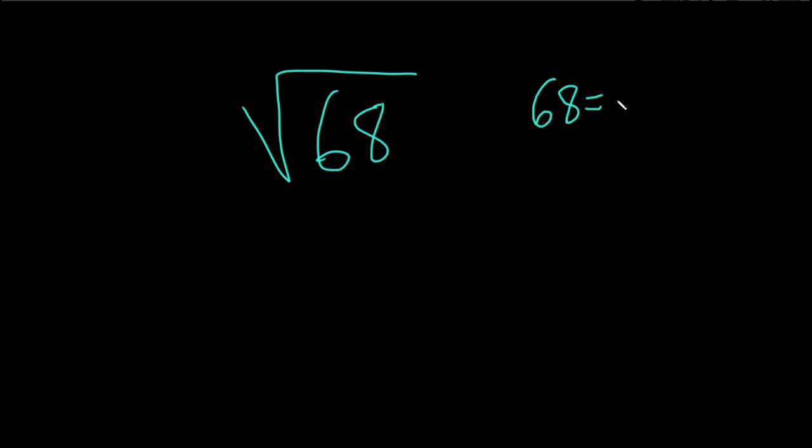So we can write this, the easiest way I see, is 2 times 34. 2 times 34 is 68. And then we can break up the 34 as 2 times 17. So you get 2 times 2 times 17. And now you see the 4. So this is 4 times 17.